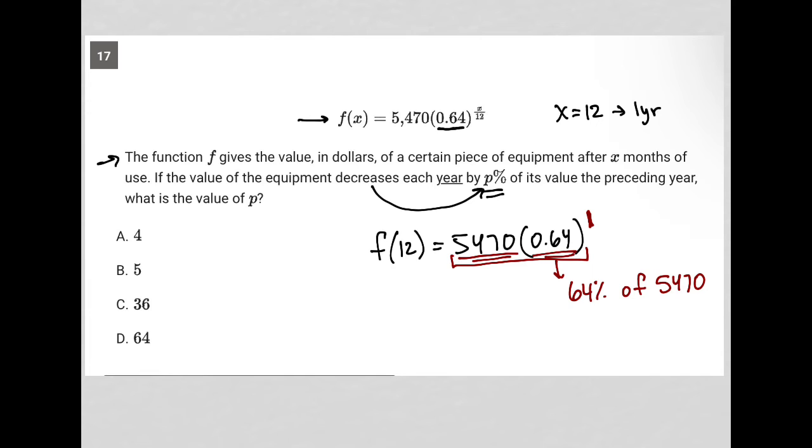What is the percent decrease that gets us down to 64%? Well, that percent decrease means that we started off with 100%, this 5,470 number at the beginning of this process.